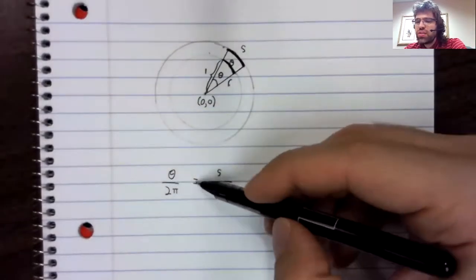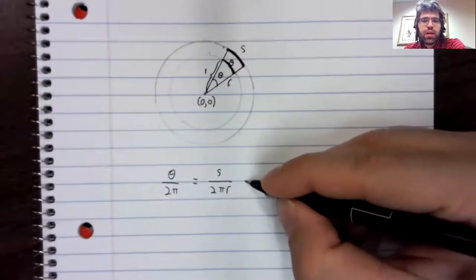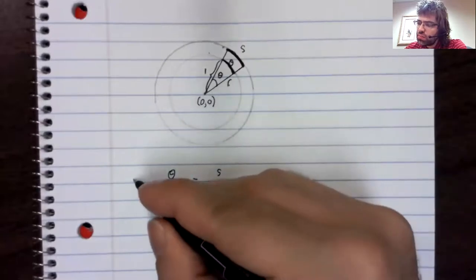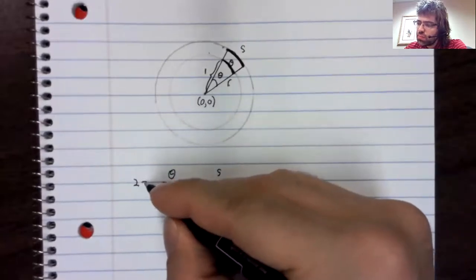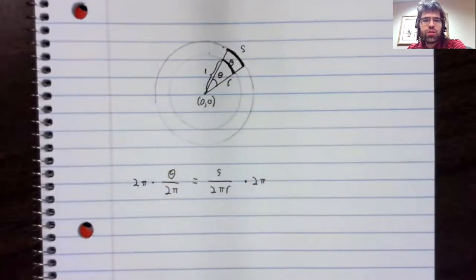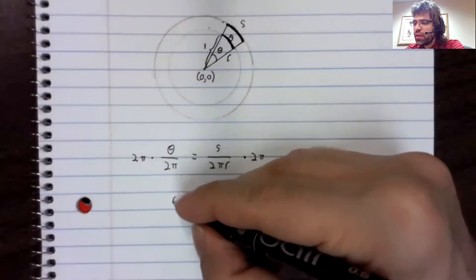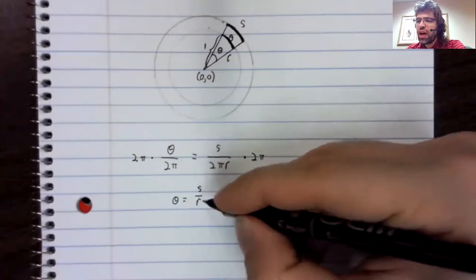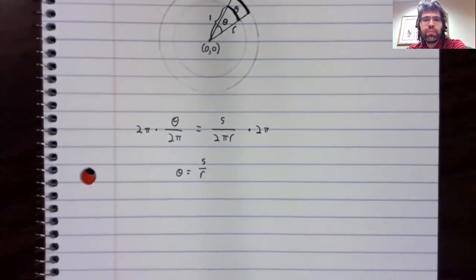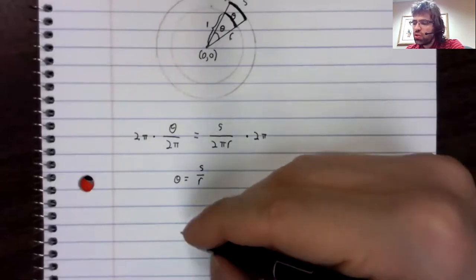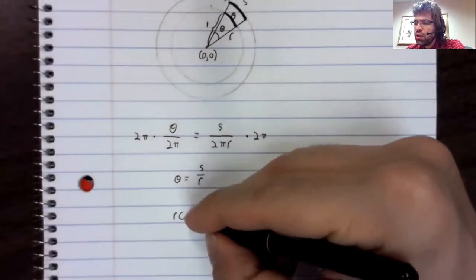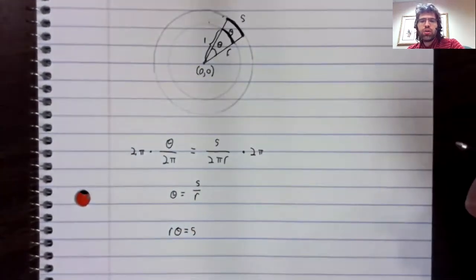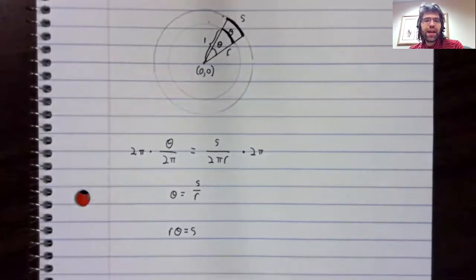Take this equality. Multiply both sides by 2π, and we get theta equals S divided by R. Multiply both sides by R to get this relationship: R theta equals S.